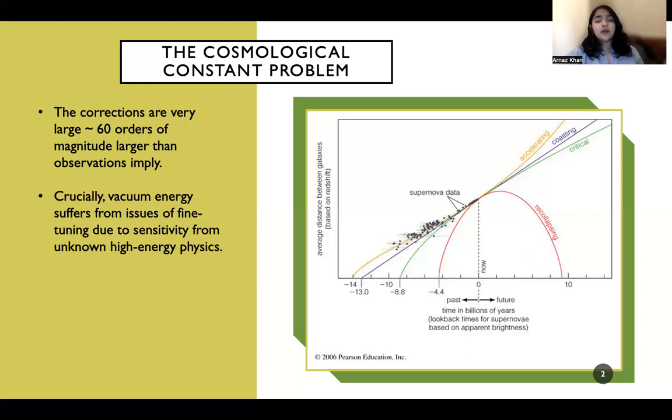Crucially, vacuum energy itself suffers from issues of fine-tuning as well. And this is due to its sensitivity to unknown physics from higher energies. This is known as cosmological constant problem. And what I'm going to talk to you about in this presentation is a simple minimal scalar field solution to the problem in the sense that we want to have a large vacuum energy and still be able to see only a small amount of it in a stable way.